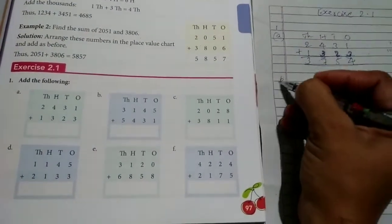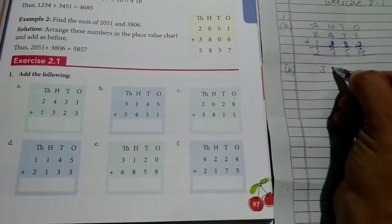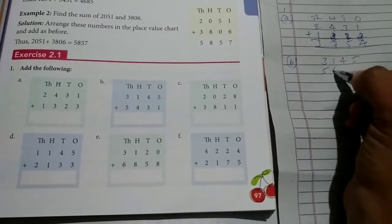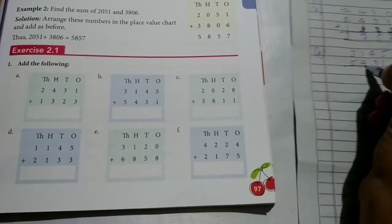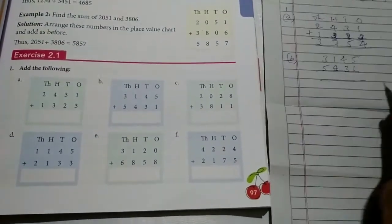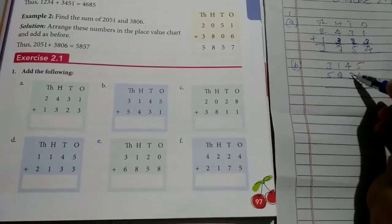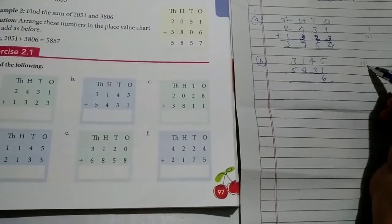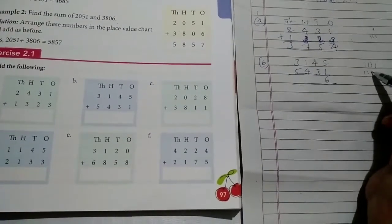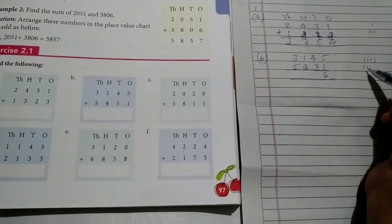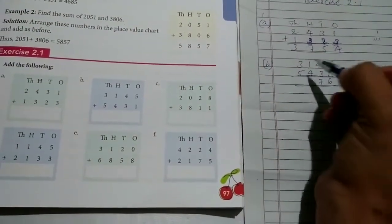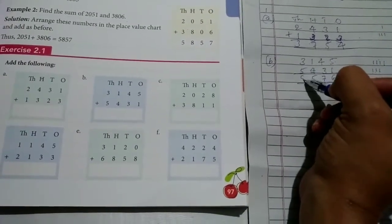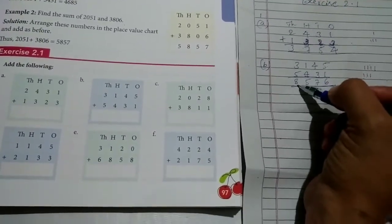And next B. 3,145 plus 5,431. 5 plus 1, 6. 4 plus 3. See, 1, 2, 3, 4. Next 1, 2, 3. That's 1, 2, 3, 4, 5, 6, 7. Take 7 lines. Next 1 plus 4, 5. 3 plus 5, 8. You add slowly and write correct answer.